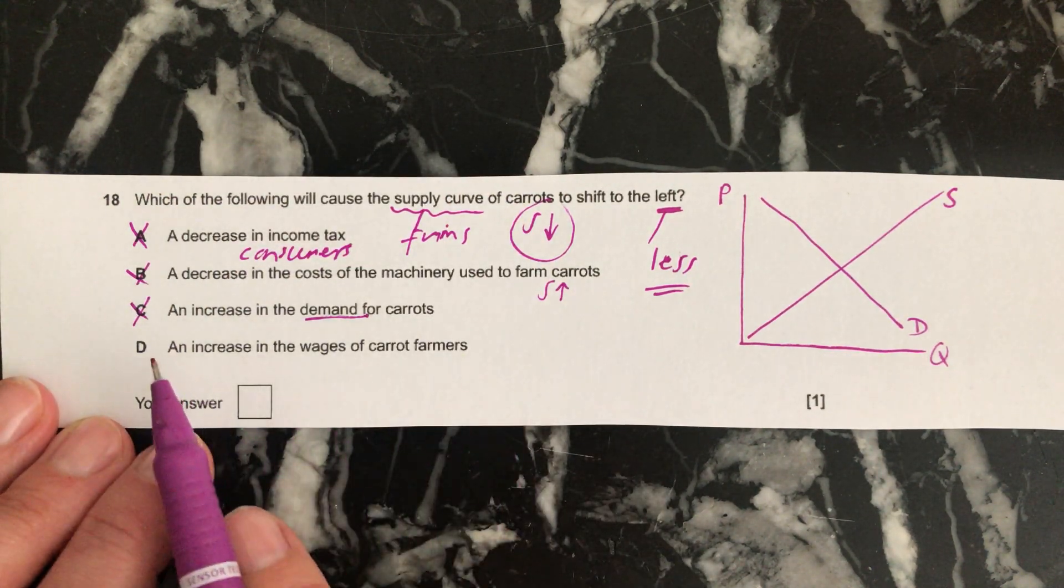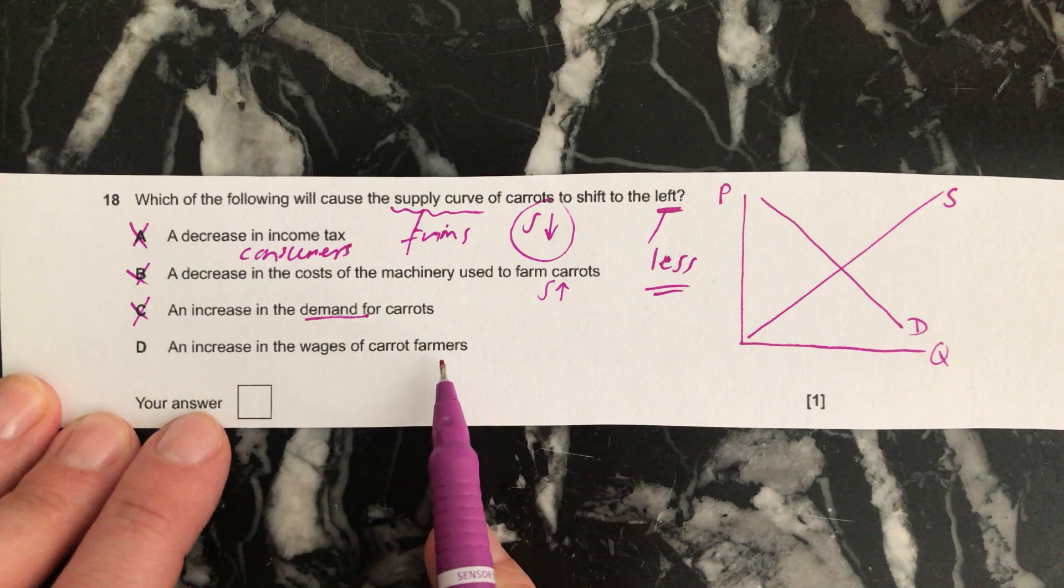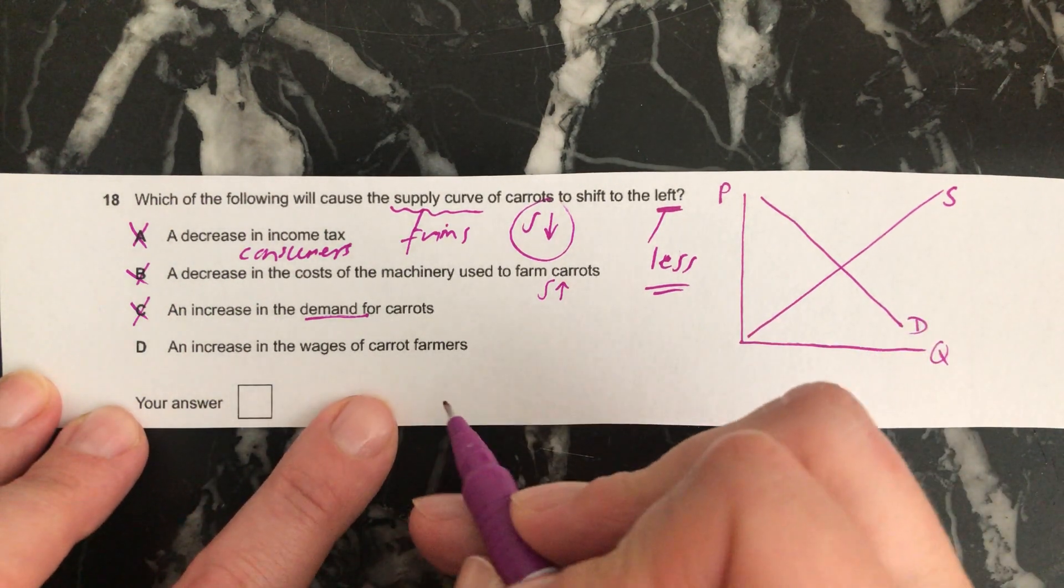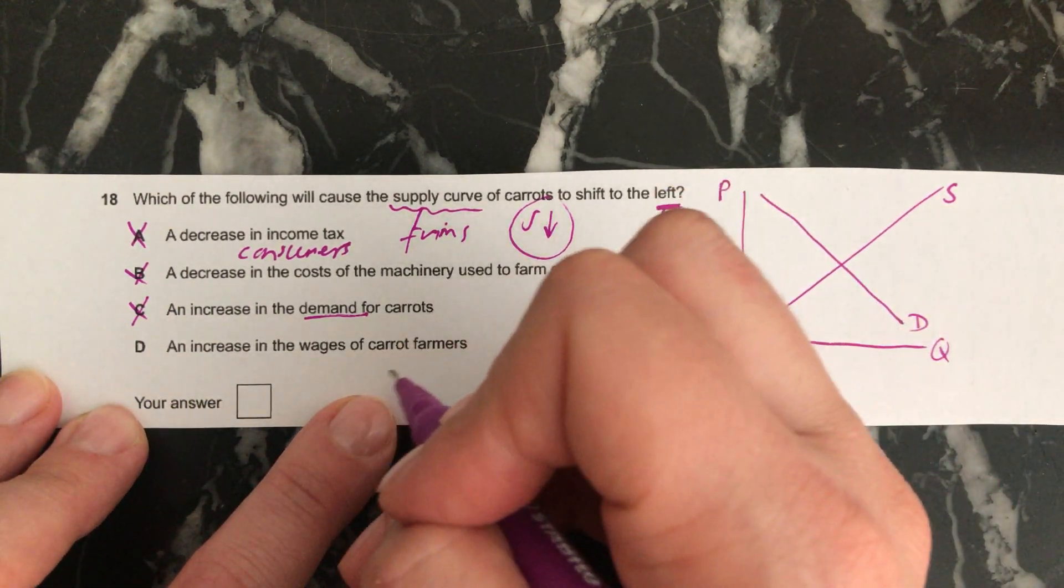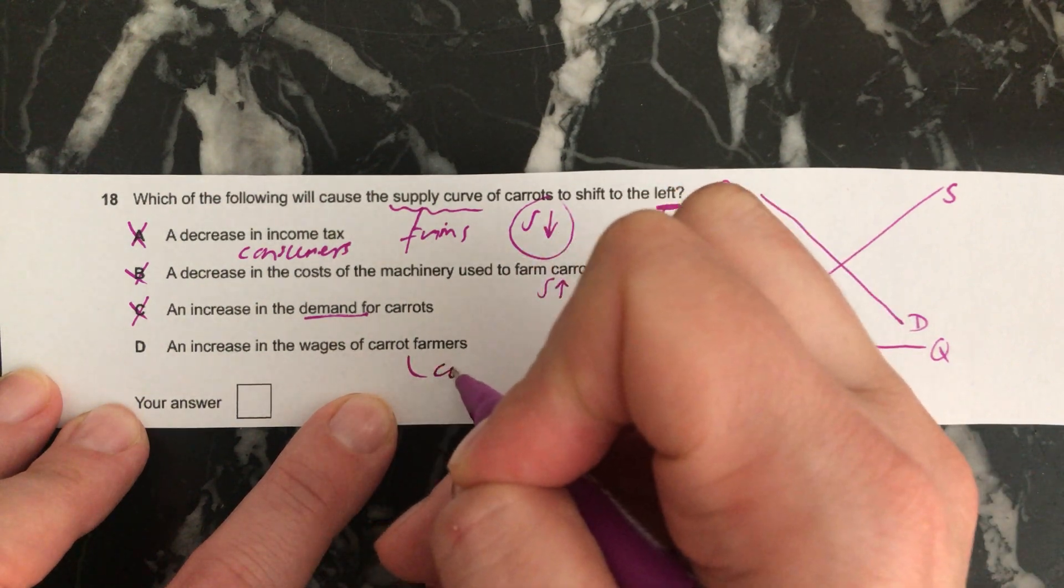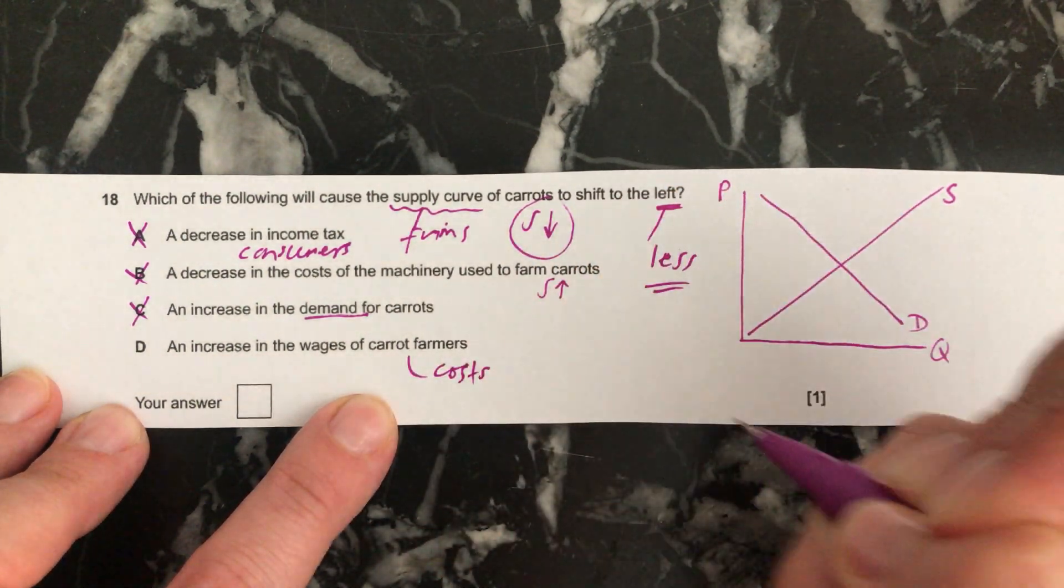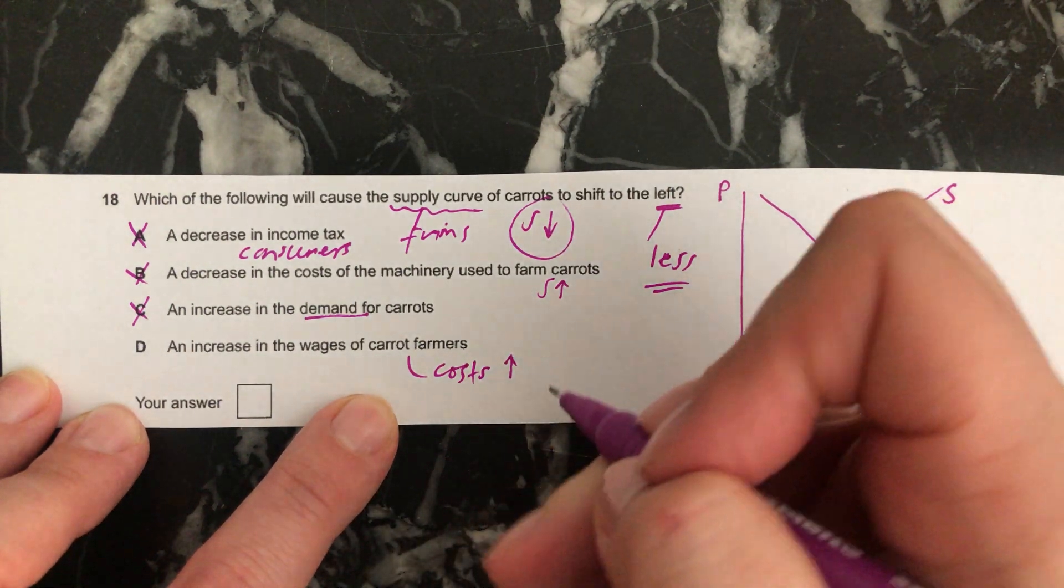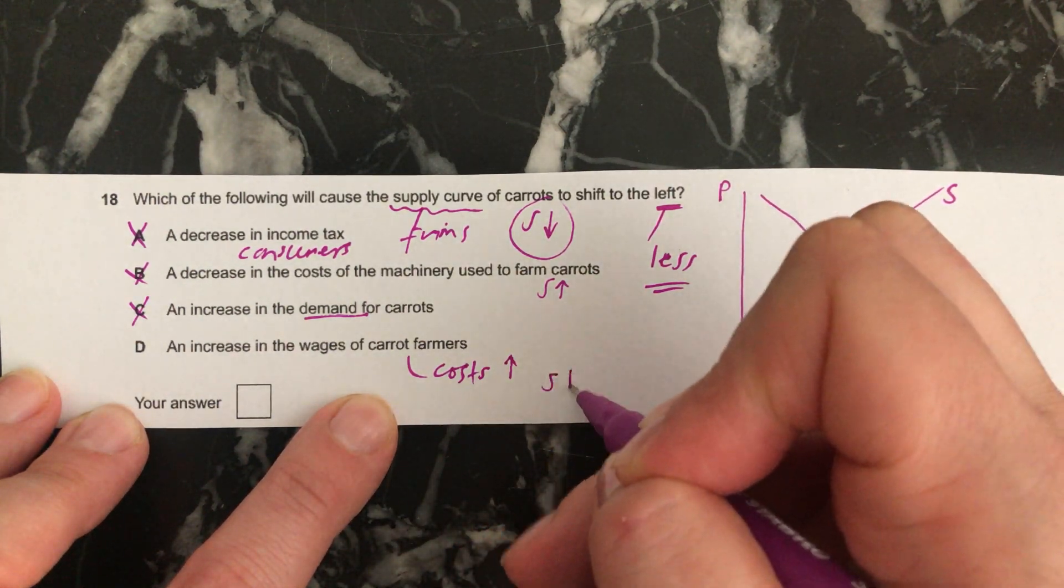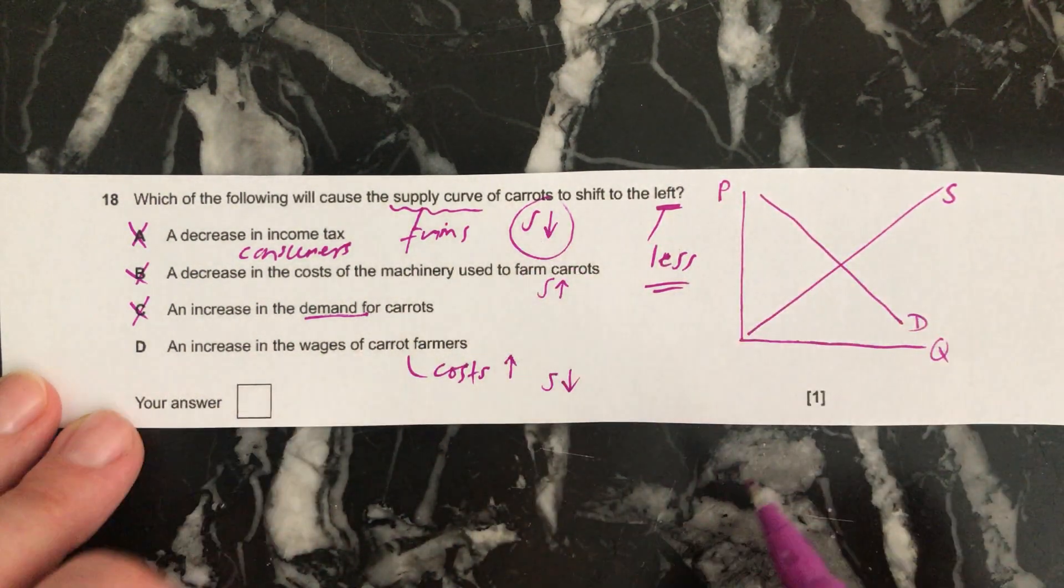So hopefully the last one's right. An increase in the wages of carrot farmers. If they have to pay the carrot farmers a higher wage, then this will mean that the costs for the farmers go up. And remember, if your costs go up, you can't supply as much. So supply goes down, and that's what we're looking for.